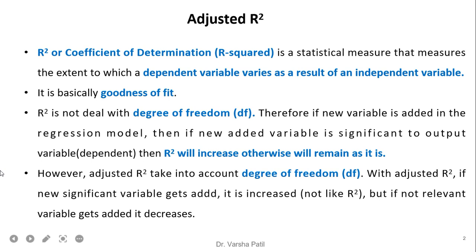R-square, or coefficient of determination, is a statistical measure that measures the extent to which a dependent variable varies as a result of an independent variable. It is basically goodness of fit.